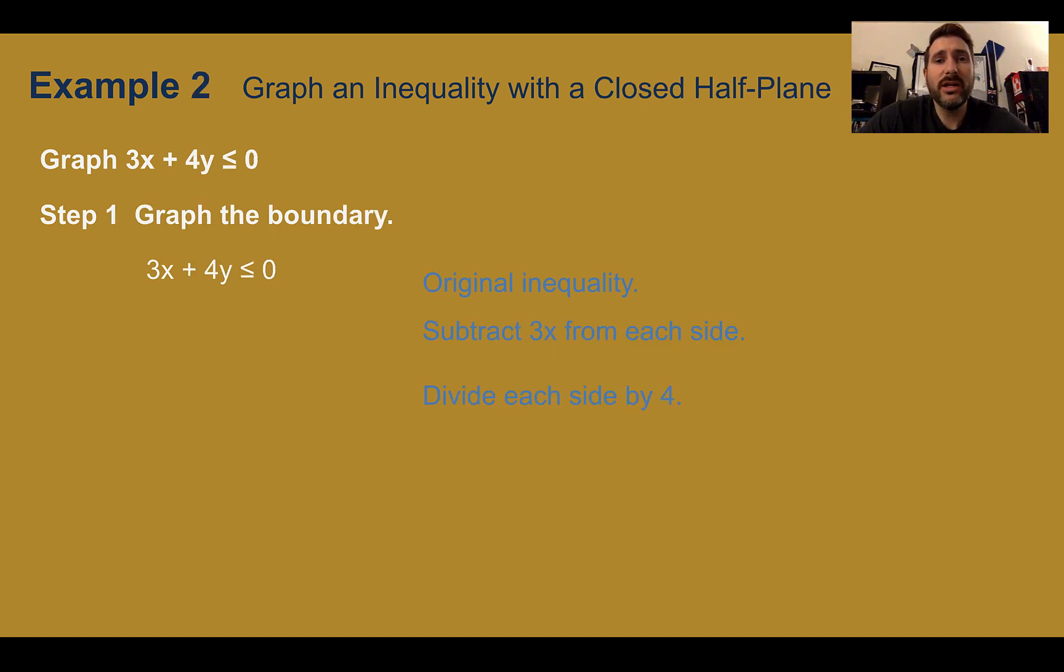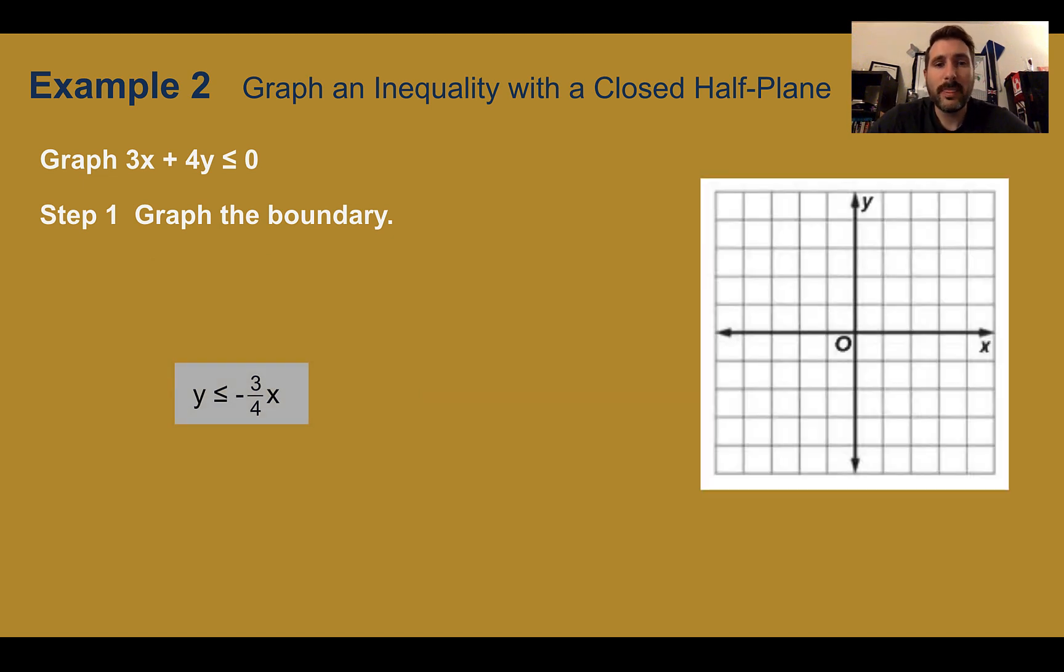Example 2, graph an inequality with a closed half-plane. So graph 3x plus 4y is less than or equal to 0. We're going to follow the same steps as before. So I'm going to turn this into slope-intercept form by subtracting 3x from both sides and then dividing both sides by 4. I do not need to flip the inequality sign. Now graphing it, I would have negative 3/4 x. Again, we can just use Desmos to help us see what it looks like.